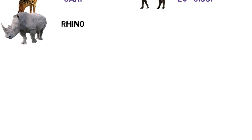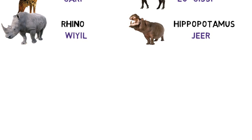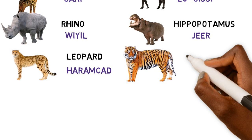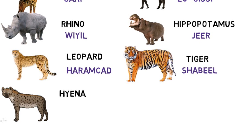Most people confuse a rhino and a hippopotamus. A rhino is Wiyiri, while a hippopotamus is Jer. The same goes for a tiger and a leopard — a leopard is Harumaad, while a tiger is Chevelle.